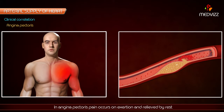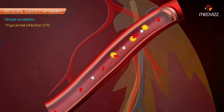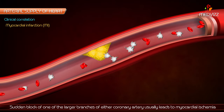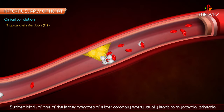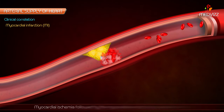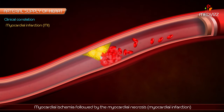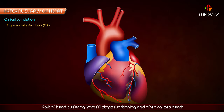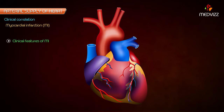Myocardial infarction: a sudden block of one of the larger branches of either coronary artery usually leads to myocardial ischemia followed by myocardial necrosis — which is myocardial infarction. The part of the heart suffering from myocardial infarction stops functioning and often causes death. This condition is termed a heart attack or coronary attack.